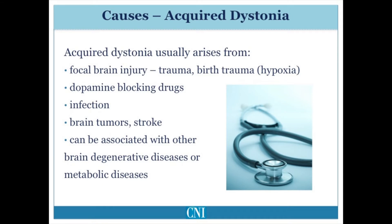Dopamine receptor-blocking drugs, such as those used to treat nausea and vomiting and others used to treat schizophrenia or depression, may cause what is termed tardive dystonia. Lastly, dystonia may occur as part of a more widespread brain disorder in certain brain degenerative or metabolic diseases.